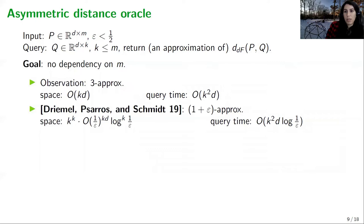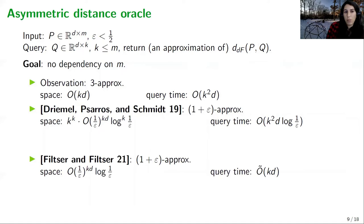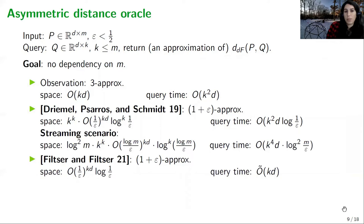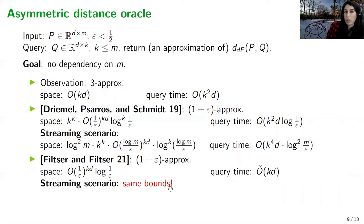If we want a (1+epsilon)-approximation this becomes more complicated. Dreimer, Pseus, and Schmitt showed a (1+epsilon)-approximation with exponential space and quadratic query time. In our paper we show a (1+epsilon)-approximation with near-linear query time and significantly improved exponential space — we don't have the k^k factor. For the streaming scenario, Dreimer, Pseus, and Schmitt showed an algorithm with query time roughly k^4 and space that depends badly on m. In our paper we extend our algorithm to the streaming scenario and achieve the exact same space and query bounds: linear query time and space independent of m.